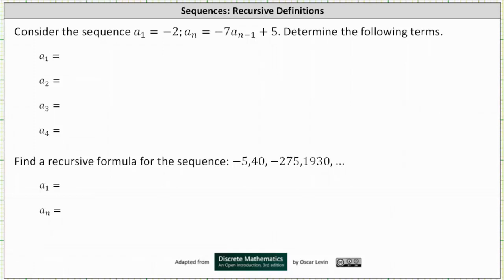Consider the sequence a sub 1 equals negative 2 and a sub n equals negative 7 times a sub n minus 1 plus 5. We want to determine the following terms a sub 1 through a sub 4. a sub 1 is given as negative 2.